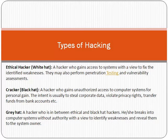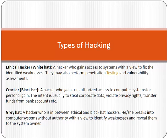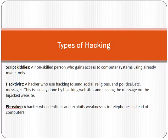Another type is gray hat. A gray hat hacker is someone between white hat and black hat. A white hat tries to access data with a positive intent; a black hat accesses data illegally with negative intent. A gray hat breaks into a computer system without authority but with a view to identify weaknesses and reveal them to the system owner. So gray hat is a person who accesses the data, finds the vulnerabilities, and then informs the system owner.